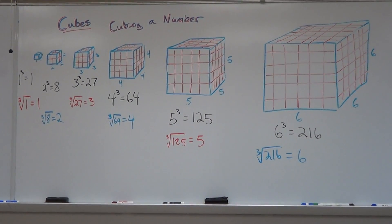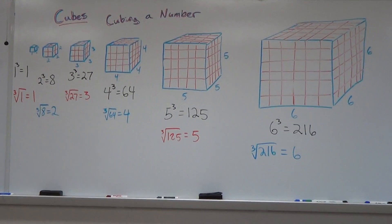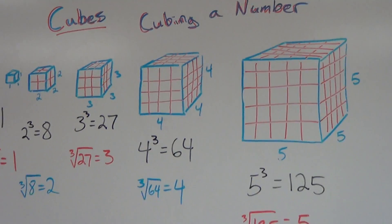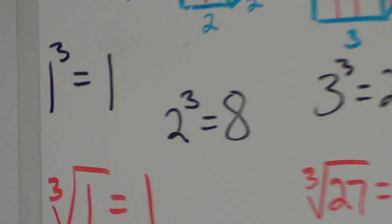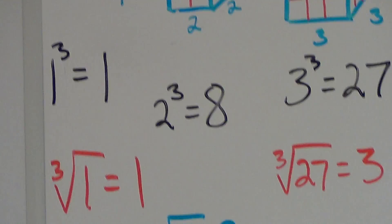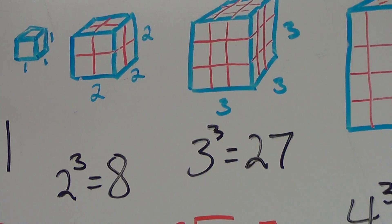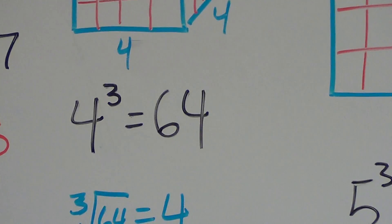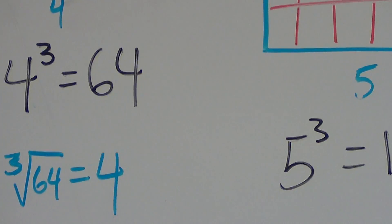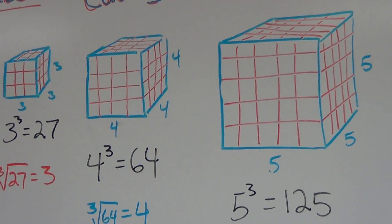Hey friends, in this video I'm going to be talking about the cubed root of numbers. You should have already seen the cubed video on how to cube numbers. Up here I have reminders: 1 cubed means 1 times 1 times 1, which is 1. 2 cubed is 8, and 3 cubed is 27 — so 3 times 3 times 3. And 4 cubed is 4 times 4 times 4, which is 64. So these are what are called the perfect cubes.